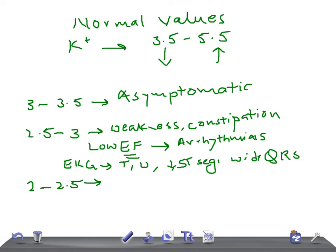Now let's talk about the potassium level. If the potassium level is 2 to 2.5, then it is called as severe, and here the patient may have rhabdomyolysis.